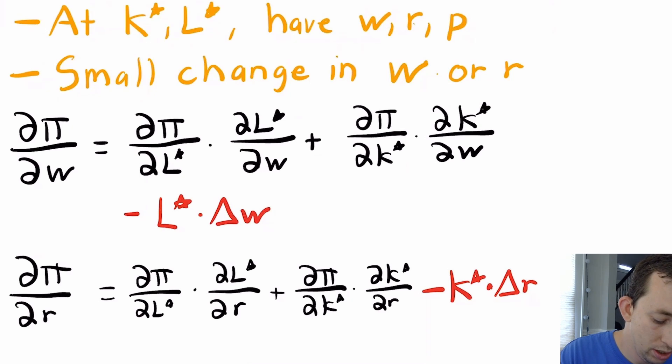When you take ∂π/∂w, you get indirect effects. The profit changes with respect to wage through the number of workers you hire, but that change is zero. Same for the change in profit due to wage change indirectly through the number of machines—that's also zero.